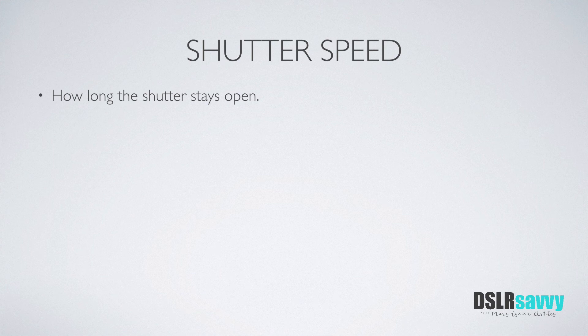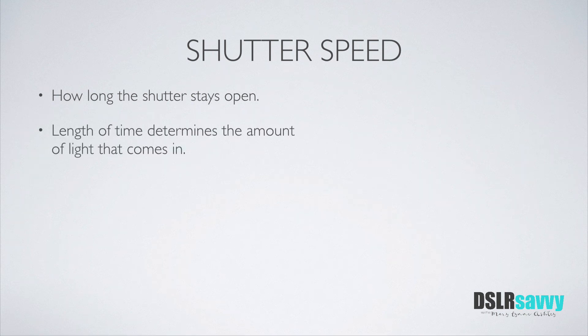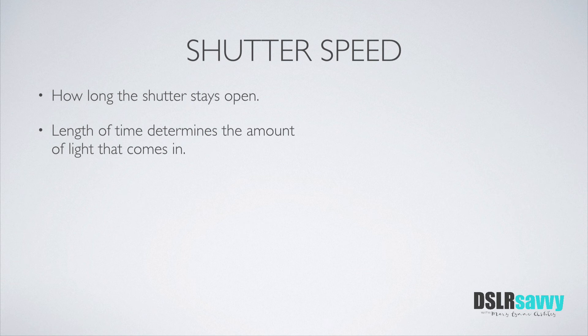What is shutter speed? Shutter speed is simply the length of time the shutter stays open while you're taking a picture. The longer the shutter stays open, the more light there is that comes in and affects your exposure. The shorter the shutter stays open, the less light there is that passes through. So if your shutter were open for an entire second, you'd have a lot more light affecting your exposure than if you used a quick shutter speed of 1/500th of a second, which is just a tiny fraction. That totally makes sense, right?